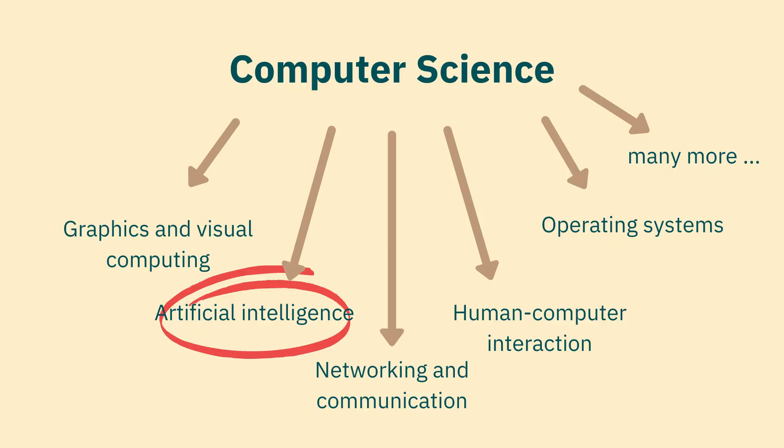The first umbrella term we have is AI. Everyone says we're doing AI, we're interested in AI, this company is doing AI — AI-powered everywhere. So what is AI? Artificial intelligence is basically a discipline of computer science. Maybe some people will argue that it's a separate topic now, but it definitely started under the umbrella of computer science. Artificial intelligence is basically trying to find a way for computers to do things independently.